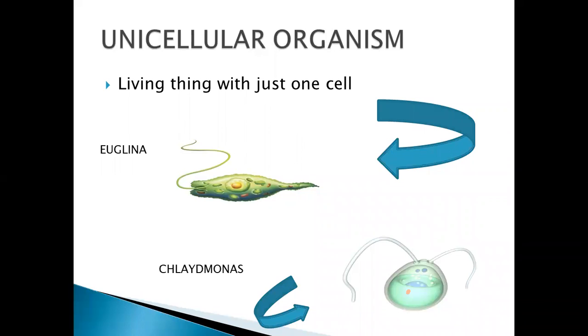Unicellular, as is shown in the name, uni means one. Organisms that are made up of only one cell, they are known as unicellular organisms. They are so minute that we cannot see them with our naked eye.